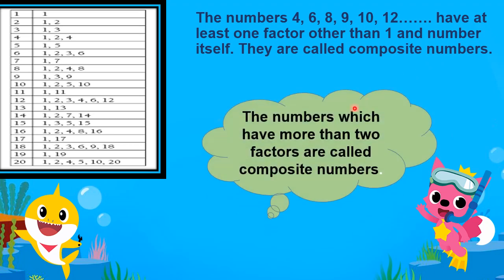The numbers which have more than 2 factors are called composite numbers. That means they have 1 and the number itself, plus at least one more factor. These are known as composite numbers.